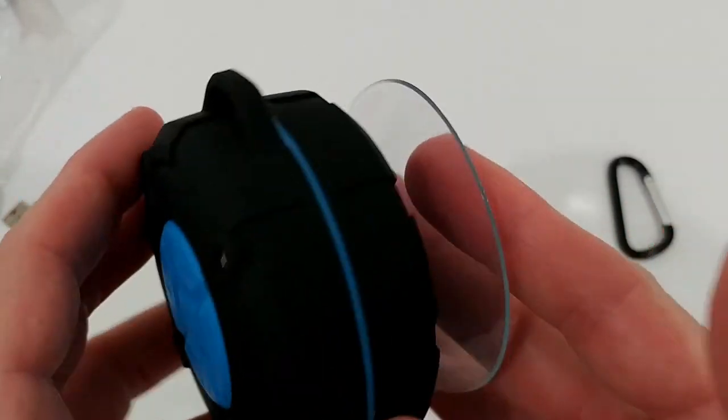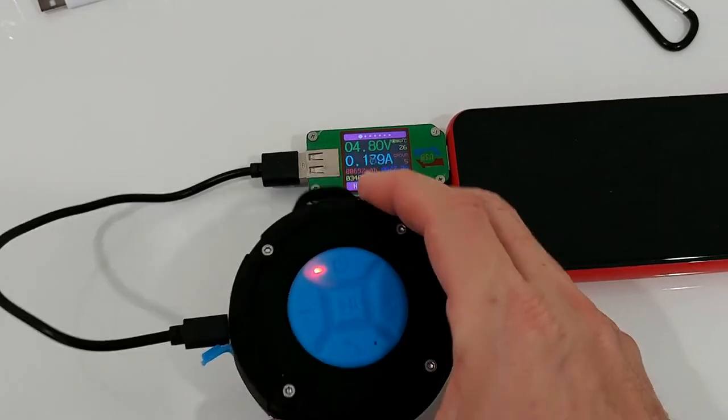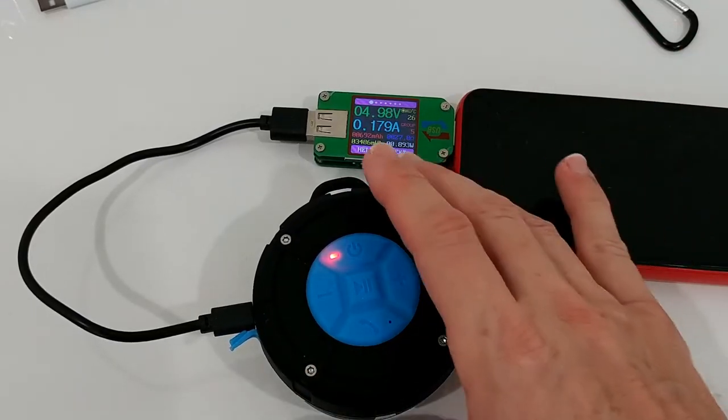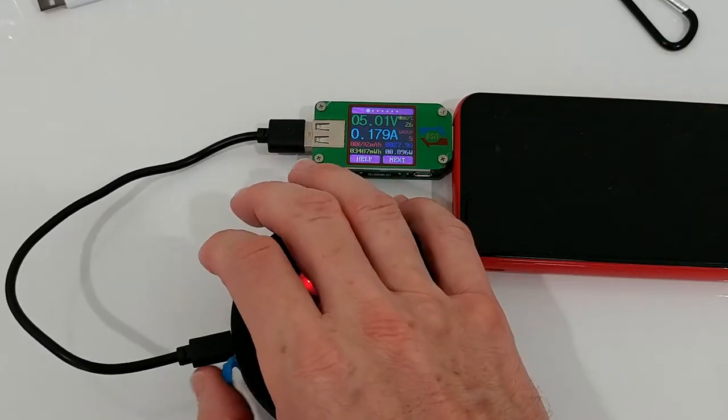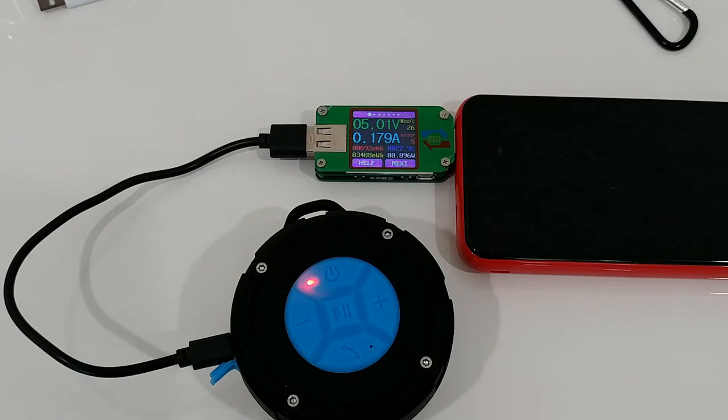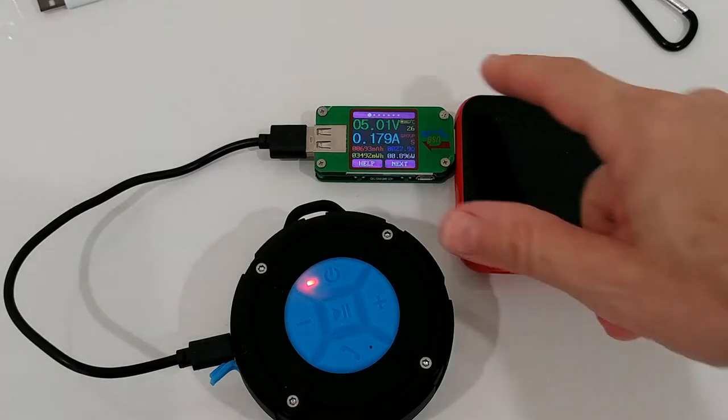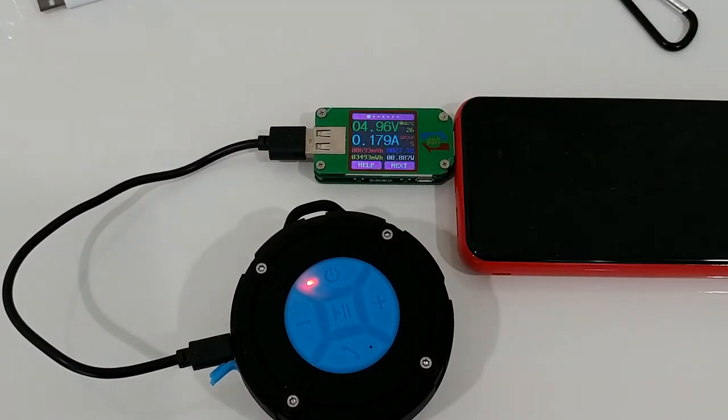I have it already connected to charge. As you can see there's a light, so either it turns off or turns blue or green when fully charged. Now it's charging at 0.2 or a little below 0.2 amps. To charge 500 milliampere hours at this pace takes almost three hours.